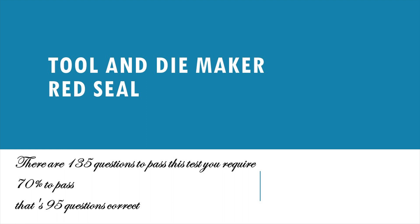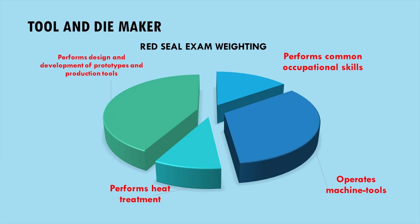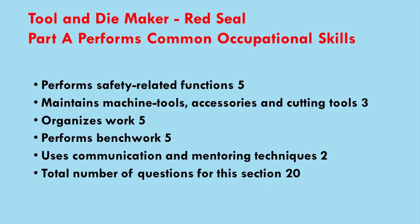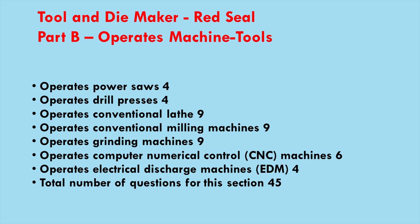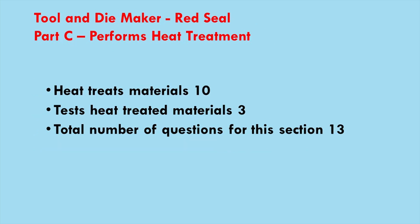The exam is broken down into four sections. Part A: common occupational skills — safety functions, tool maintenance, organization, bench work, mentoring. This section has 20 questions. Part B: machine operations — saws, drills, lathes, mill, grinder, CNC, EDM. There are 45 questions in this section. Part C: heat treatment — heat treating materials, testing heat treated materials. The total number of questions in this section is 13.